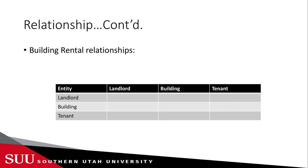Now let's look at this exercise, which will help us establish relationships. The entities are landlord, building, and tenant. From landlord to landlord — do I have a relationship type? No. From landlord to building — yes, the landlord owns the building. From landlord to tenant — yes, the landlord collects rent from the tenant.